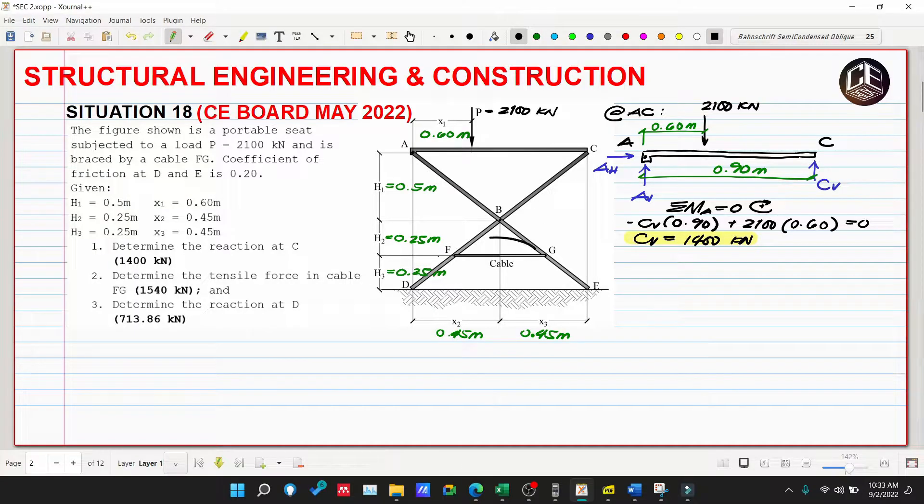Number 2: Determine the tensile force in cable FG. We can choose to cut member DFBC or member ABGE, but since we already solved the connection reaction at C, let's use member DFBC.